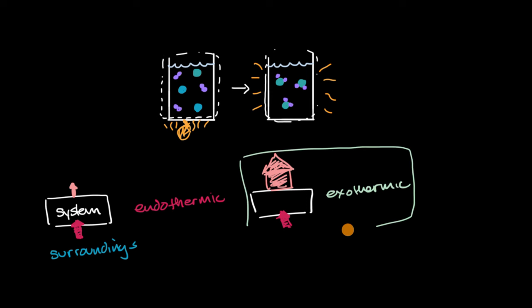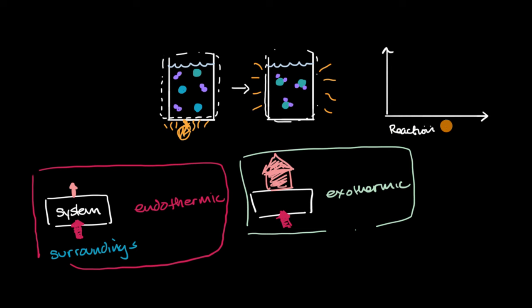Let me box these off so that we don't get confused. Now, we can also understand this in terms of potential energy and how the reaction progresses. So on the horizontal axis, we'll call this reaction progress. And then the vertical axis is potential energy. Now, our system, before we start heating it up, our system is going to be at some potential energy.